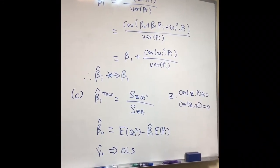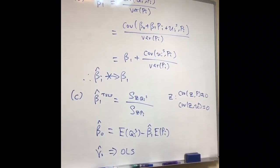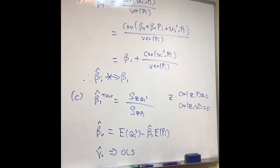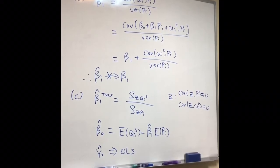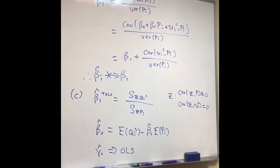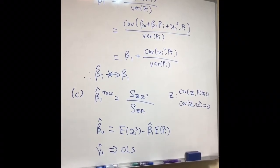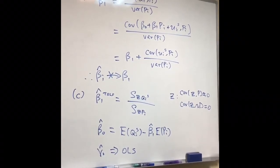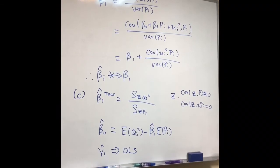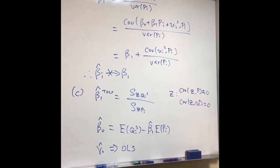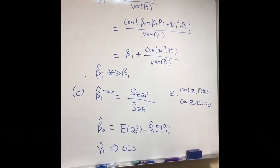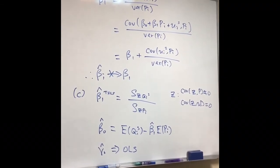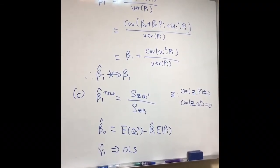That means beta_1_hat does not converge to beta_1. As a result, this is the proof of inconsistency.